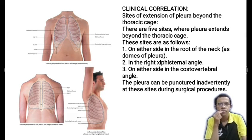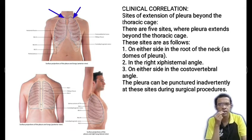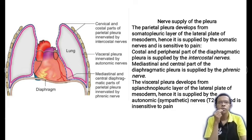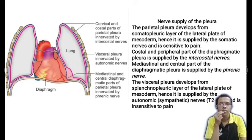Clinical correlation — sites of extension of pleura beyond the thoracic cage. There are five sites: number one, on either side of the root of the neck; number two, in the right xiphisternal angle; and number three, on either side in the costovertebral angle. The pleura can be punctured inadvertently at these sites during surgical procedures. Nerve supply of the pleura: the parietal pleura develops from the somatopleuric layer of the lateral plate mesoderm and is therefore supplied by somatic nerves and is sensitive to pain. The costal and peripheral part of the diaphragmatic pleura is supplied by the intercostal nerves; the mediastinal and central part of the diaphragmatic pleura is supplied by the phrenic nerve. The visceral pleura develops from the splanchnopleuric layer of lateral plate mesoderm and is therefore supplied by autonomic nerves (T2 to T5) and is insensitive to pain.